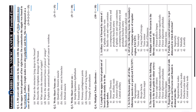Peau d'orange is another sign of carcinoma breast caused by obstruction of the superficial lymphatics. The skin has small ligaments beneath it, and involvement of the sweat gland openings due to obliteration of superficial lymphatics gives the skin an orange-peel appearance. The spread of cancer to the vertebrae occurs via intercostal lymphatics and intercostal veins, spreading cancer cells into the internal vertebral plexuses and up to the vertebrae via paravertebral lymph nodes.